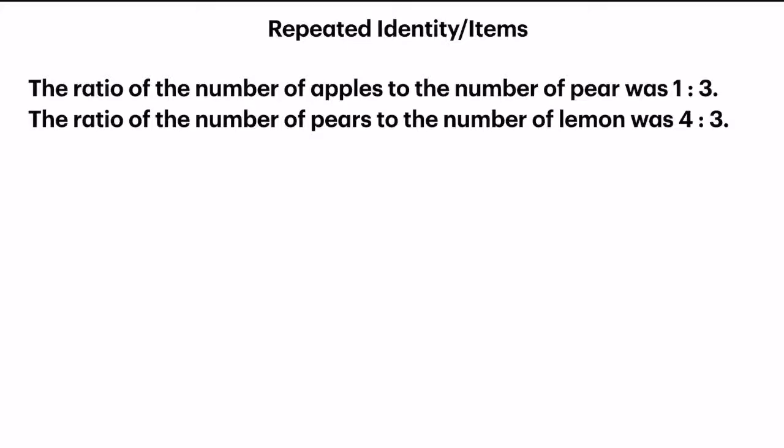In repeated identity or items questions, you will be given two sets of ratios. What is common about these two sets is that there is an item in common. For example, let's look at the question below.